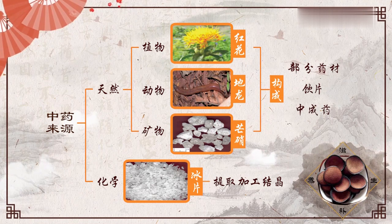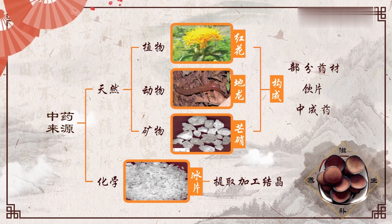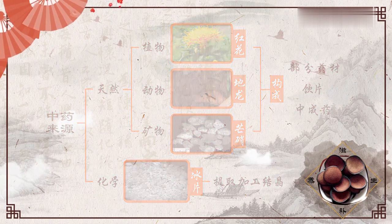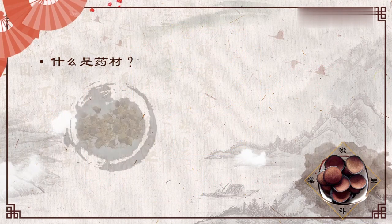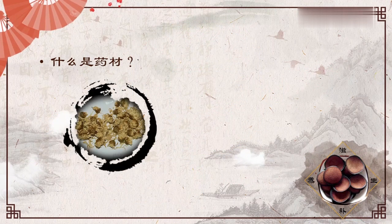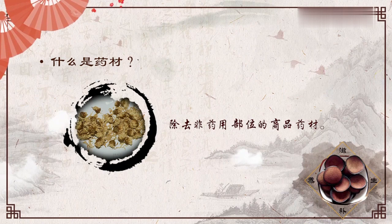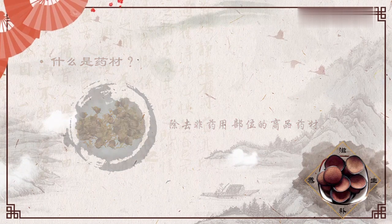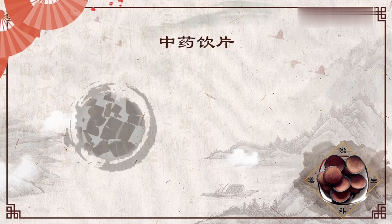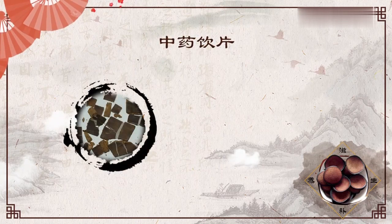所以中药实际上现在包含有药材、饮片和中成药这三个部分。那么什么是药材呢？一般而言，针对的是采收干燥以后，除去了非药用部位的商品药材，我们就称之为叫药材。